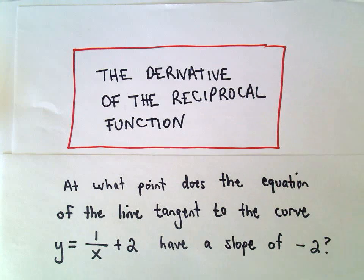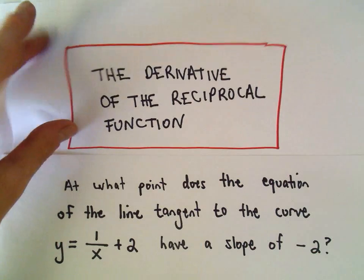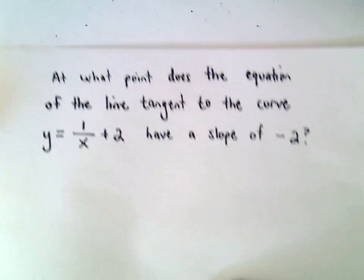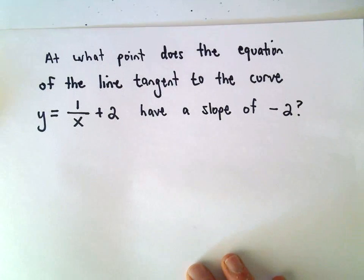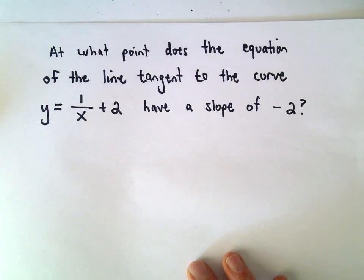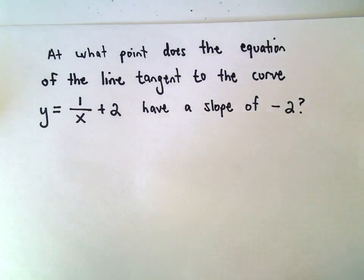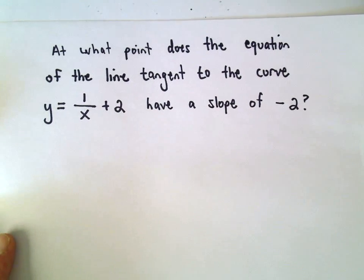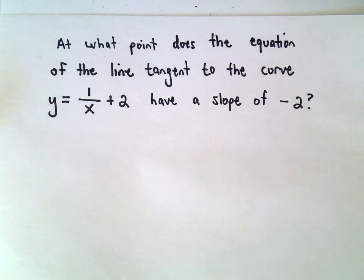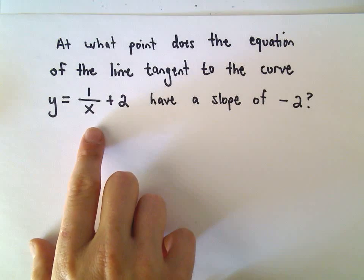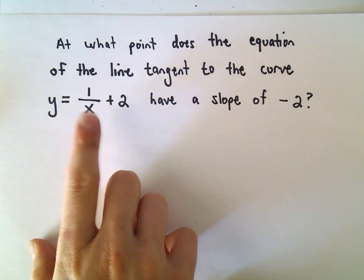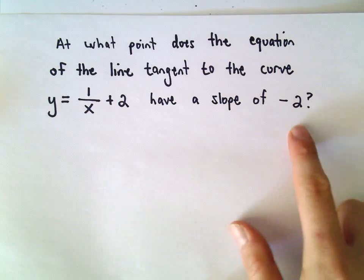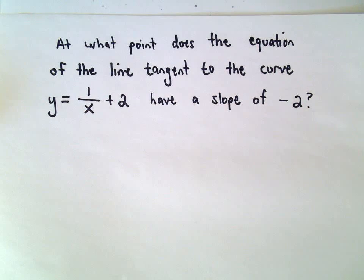In this video we're going to do another example related to the derivative of the reciprocal function. We want to figure out at what point does the equation of the line tangent to the curve y equals 1 over x plus 2 have a slope of negative 2. All we're going to have to do is find the formula for the derivative and then set it equal to negative 2.